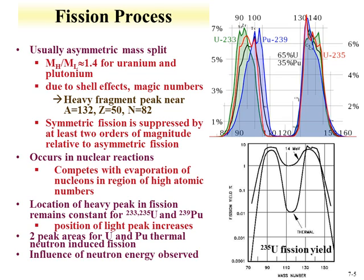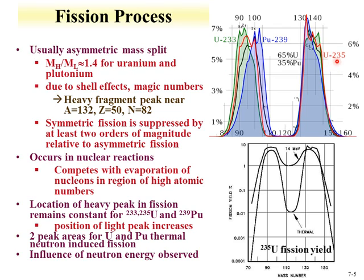In the fission process, uranium and plutonium isotopes undergo an asymmetric mass distribution. Shown here for uranium-233, uranium-235 (in red), and plutonium-239 (in blue), there is a high peak that remains fairly consistent across isotopes, and a lower peak that increases with A. The heavy-to-light mass distribution ratio is about 1.4 for uranium and plutonium. These peaks are due to shell effects from magic numbers — the heavy peak is close to mass 132, which is doubly magic (50 protons, 82 neutrons, i.e., tin-132). Symmetric fission is suppressed by a couple orders of magnitude relative to asymmetric fission.